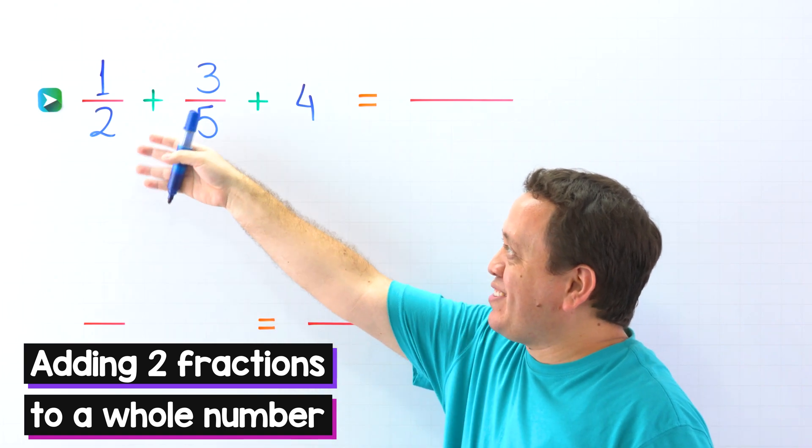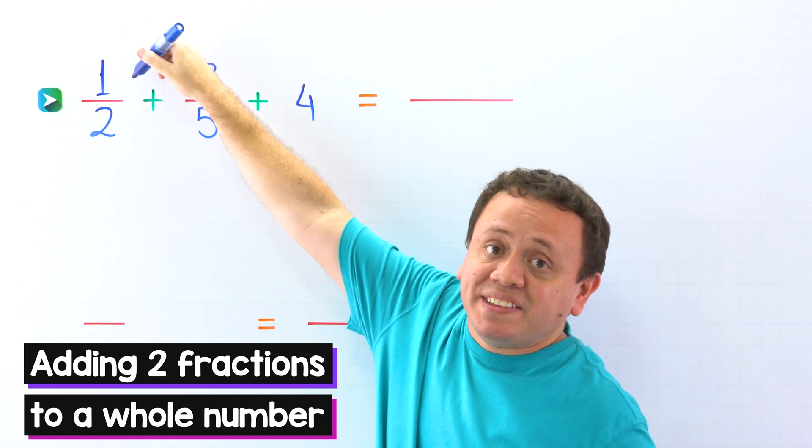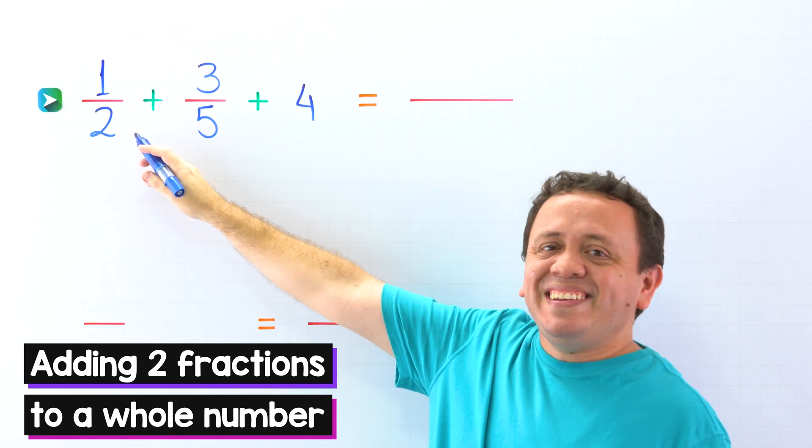But first, we need to remember that in a fraction, like this one, the top number is the numerator, and the bottom number is the denominator.